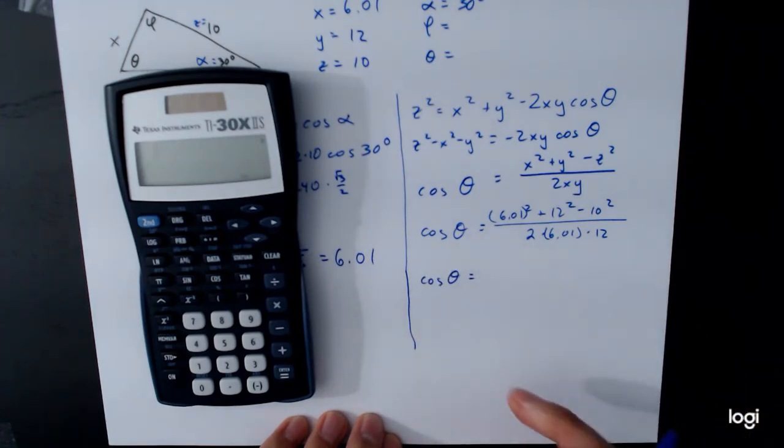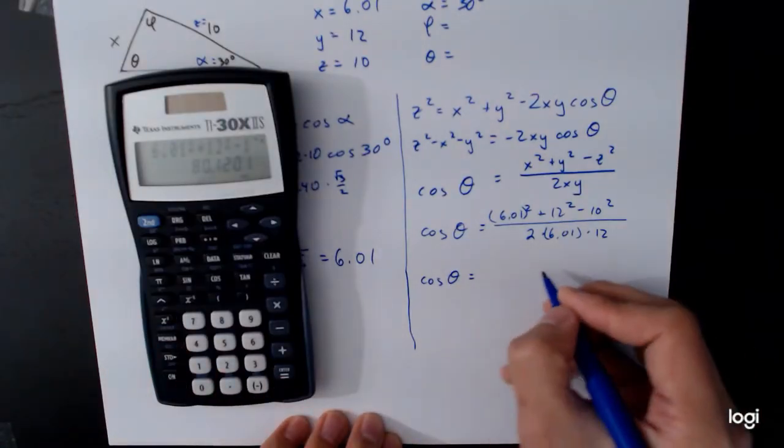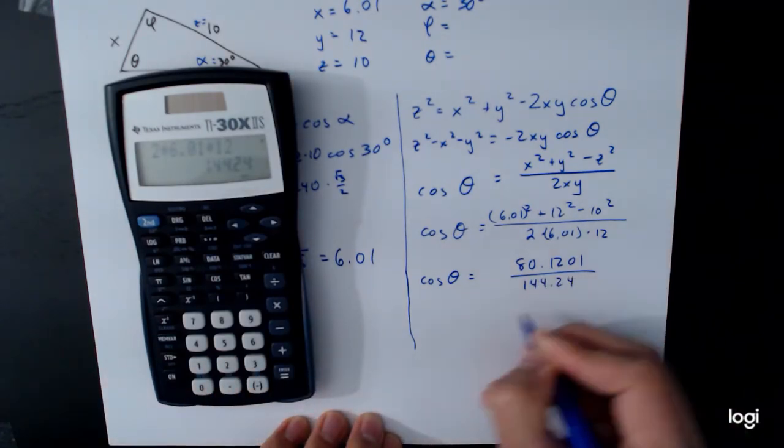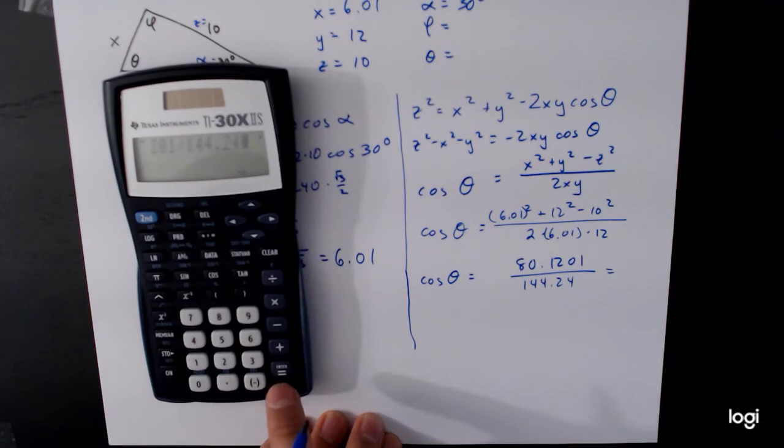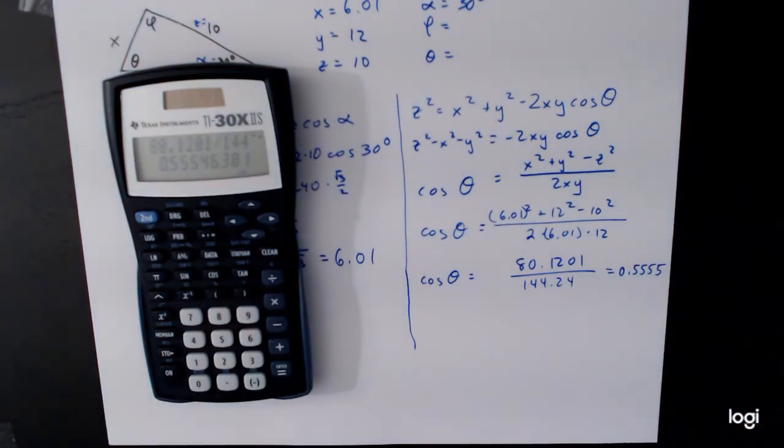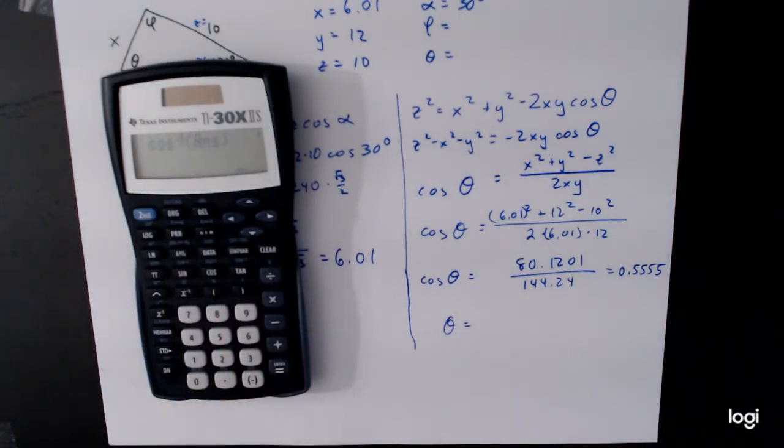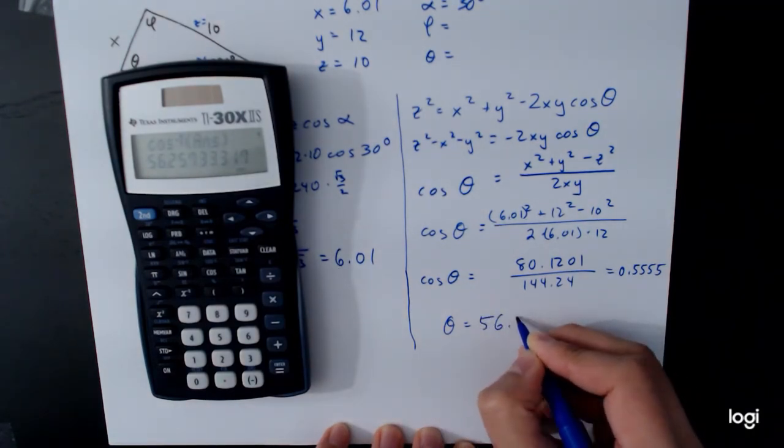Now, in order to be safe about this, what I recommend to students is that they calculate the numerator and denominator separately, and then calculate the quotient. And again, the reason for this is just that if you're not careful, you can accidentally do the wrong calculation in the calculator and never even realize it. So 80.1201 divided by 144.24 is equal to 0.55546. And then now we can take the inverse cosine of this. The inverse cosine will give us only one angle. And that's really important here because we don't have to worry about the ambiguous case. So 56.26 degrees. So theta is 56.26 degrees.